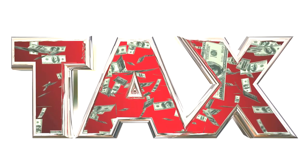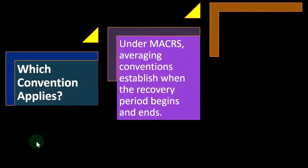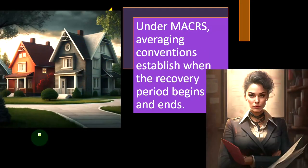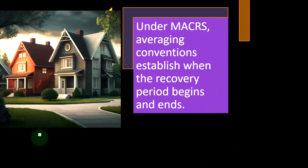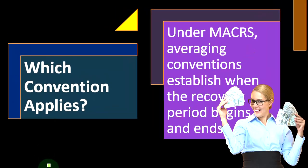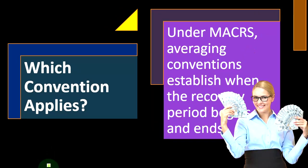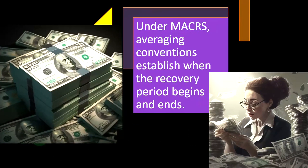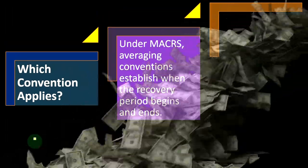Continuing our discussion of MACRS depreciation — which convention applies? We've talked about the type of property and the number of years to depreciate over; now we get into conventions. The starting point is straight-line depreciation, which is conceptually straightforward: take the depreciable property, decide how long to depreciate it over, divide the cost by that number of years, and depreciate an even amount over that time frame.